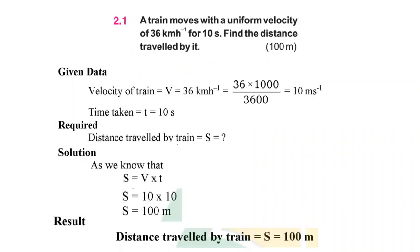Before discussing problems, we discuss the proper method of solving problems. For solving problems, there are basically four headings: given data, required, solution, and result. After reading the statement, we write the parameters that are given under 'given data.' Under 'required,' we write the parameters that we need to find. The calculations or operations we perform go under 'solution.' At the end, the answer goes under the 'result' heading.